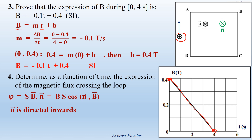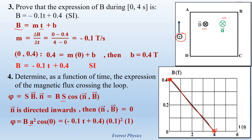So the angle between B and N is 0. The flux becomes B times A squared times cosine 0, where A squared equals S. Since the loop has a square shape, S is equal to the side times the side, which is equal to A squared. Now replace B by minus 0.1T plus 0.4, and A, which equals 10 centimeters, equals 0.1 meter. Cosine 0 is equal to 1. Therefore, the flux becomes minus 0.001T plus 0.004 in SI units.